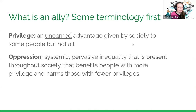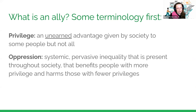We are actually here to learn more about what is an ally. So we're going to talk a little bit about terminology first. Privilege is an unearned advantage given by society to some people but not all — for example, me not being disabled is a privilege. Oppression is a systemic, pervasive inequality present throughout society that benefits people with more privilege and harms those with fewer privileges.